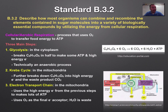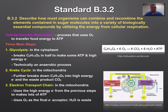The next two steps occur inside the mitochondria: the Krebs cycle and the electron transport chain. Both are considered aerobic because they require oxygen. The Krebs cycle occurs in the matrix of the mitochondria, where leftovers from glycolysis are further broken down. That creates a waste product of carbon dioxide and lots of high-energy electrons that move to the electron transport chain.